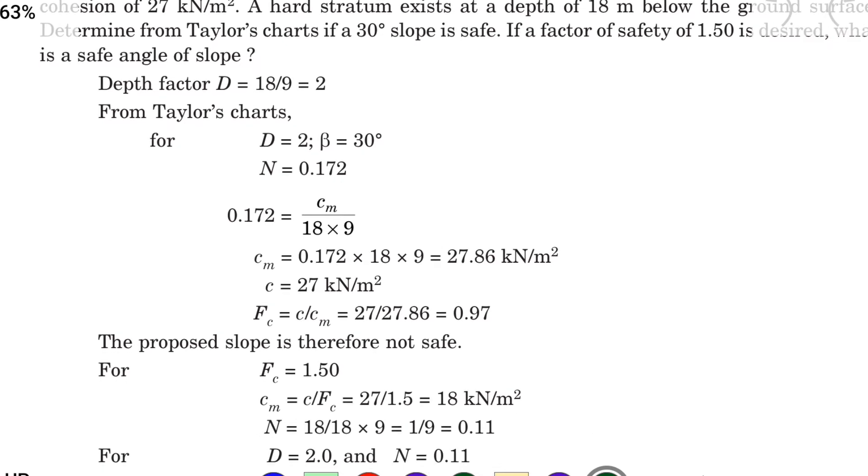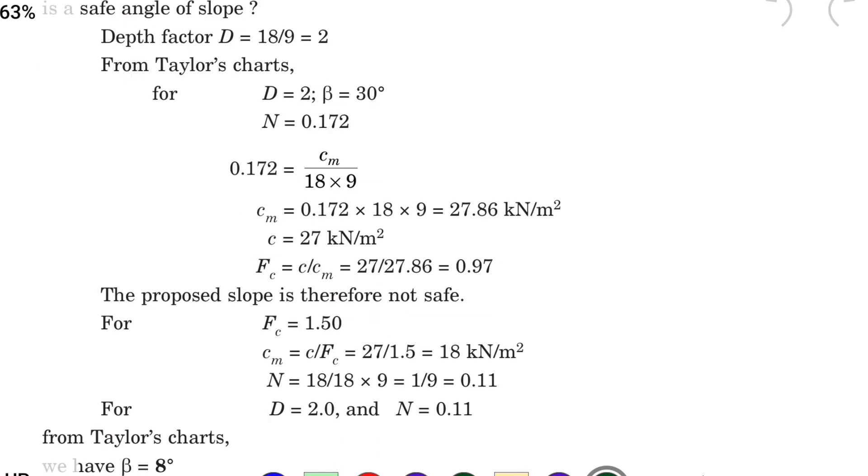So we can substitute all the values. So CM equal to 0.172 into 18 into 9 equal to 27.86 kN per meter square. So that is why we find out CM mobilizational cohesion equal to 27.86 kN per meter square.